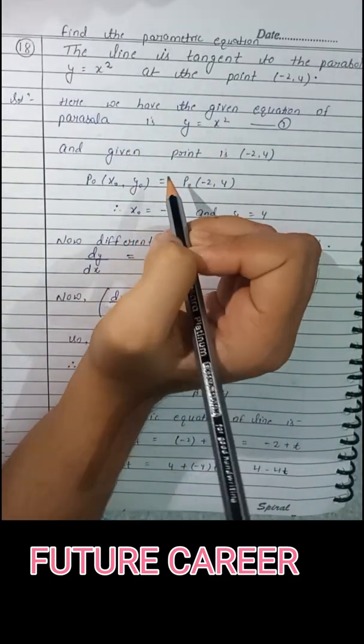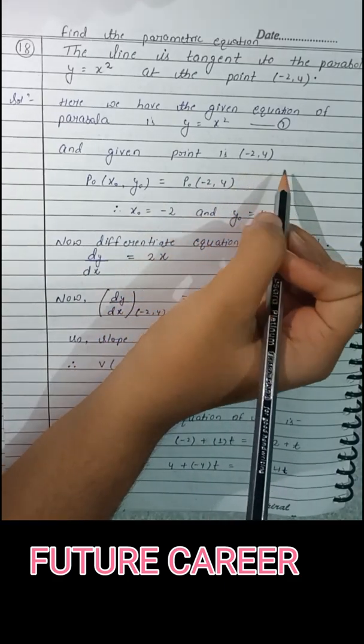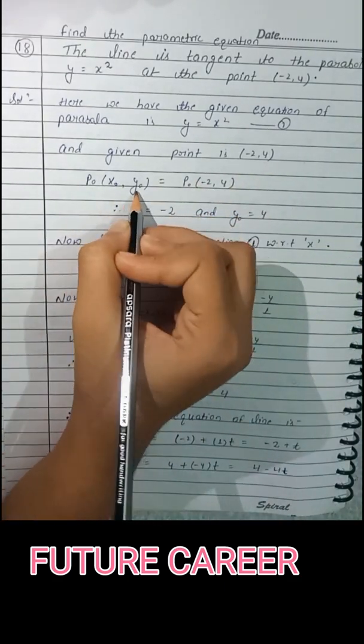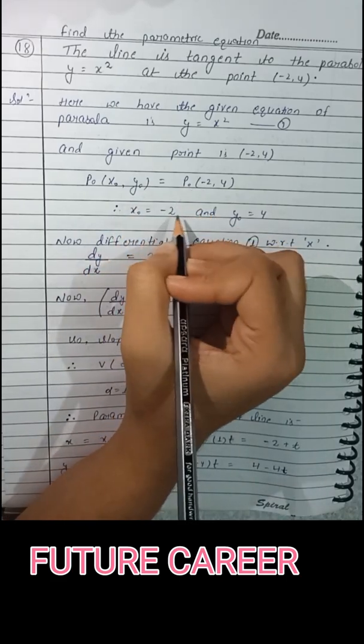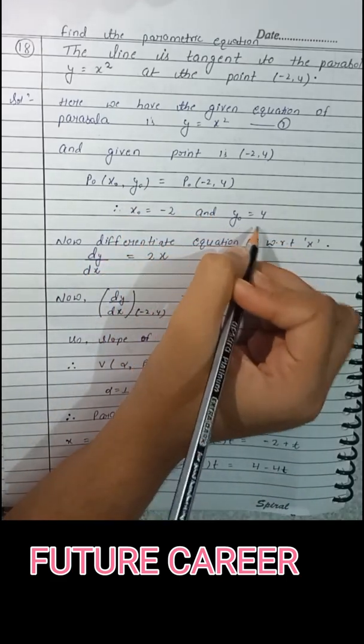equals x squared, and the given point is (-2, 4). So P₀(x₀, y₀) equals (-2, 4), so x₀ equals -2 and y₀ equals 4.